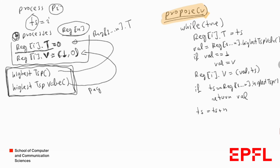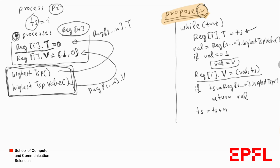Here we can see the propose function of this algorithm. A process P_i proposes value v, initially stores its timestamp in its location in this array, then gets the highest timestamp value. If no value exists yet in this array, it stores v in val, proposing its own value to be decided. Then it stores the pair (val, timestamp) in the array. If its current timestamp is the highest timestamp, the algorithm terminates and it decides on val. Otherwise, we increment timestamp by n and the process performs the loop again.